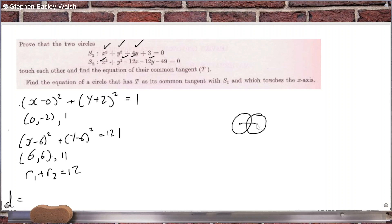Yeah, it should be smaller than 12. So let's see. That's square root 36 plus 64, which is square root 100, which is 10, which is less than 12. So therefore, they meet.